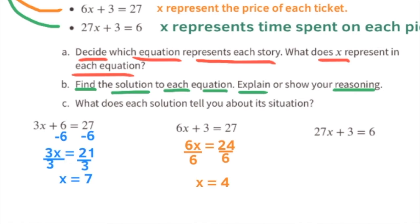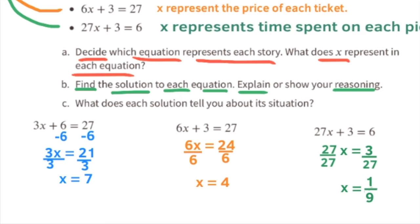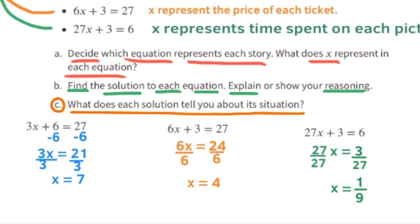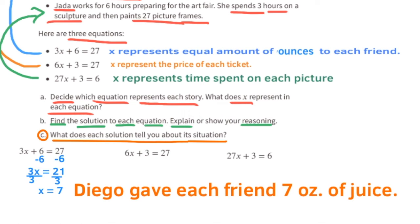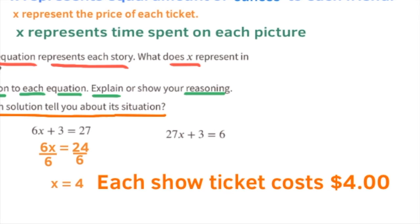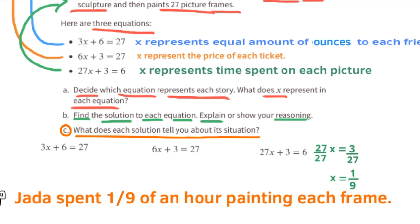For 27x + 3 = 6: subtract 3 from both sides to get 27x = 3. Divide both sides by 27 — x equals 3/27, which simplifies to 1/9. The first solution tells us Diego gave each friend 7 ounces of juice. The second tells us each ticket costs four dollars. The third tells us Jada spent one-ninth of an hour painting each frame.